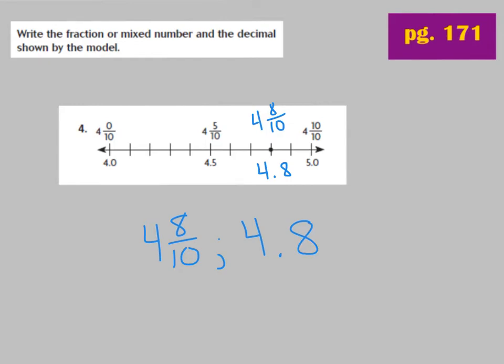So counting from 4 wholes: 6 tenths, 7 tenths, 8 tenths. We have 4 and 8 tenths as a mixed number, and in decimal form, 4.8. Notice: 4 wholes, then "and" at the decimal point, and 8 is in the tenths place — not tens, but tenths.